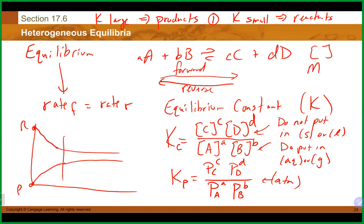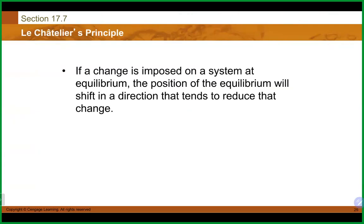It doesn't matter how much of any species you start with — all reactants, all products, or a mixture. As long as temperature doesn't change, the system always comes to rest at the same K value, the same ratio of products to reactants. Equilibrium concentrations or pressures must be used in the expression; if you have K and some values, you can solve for an unknown equilibrium concentration.